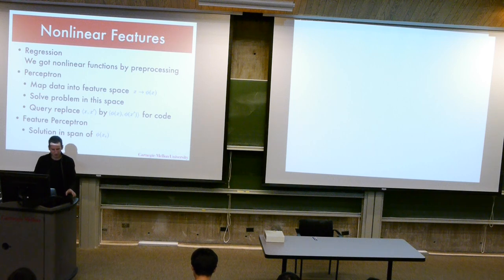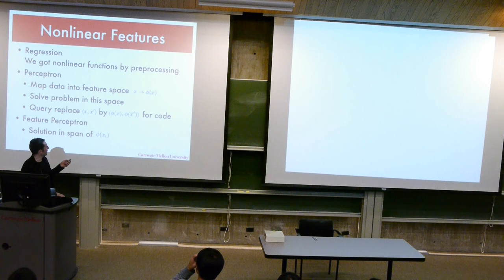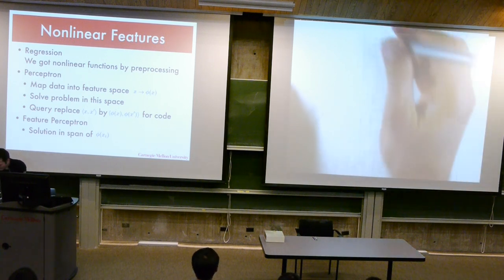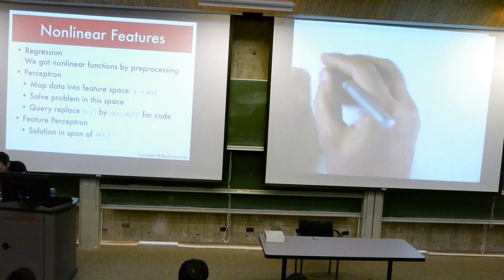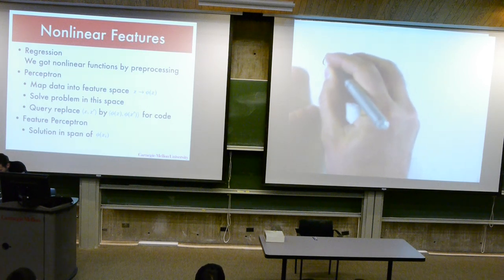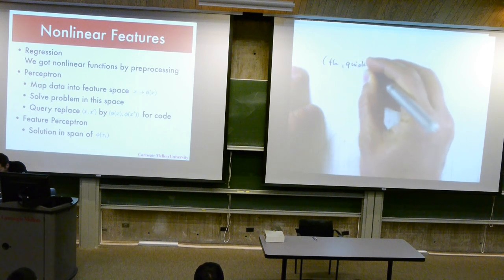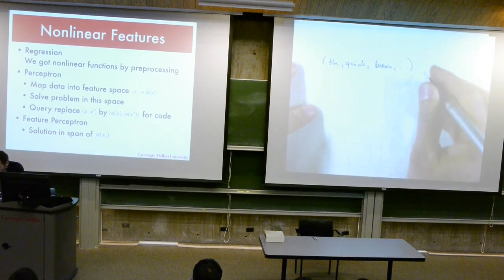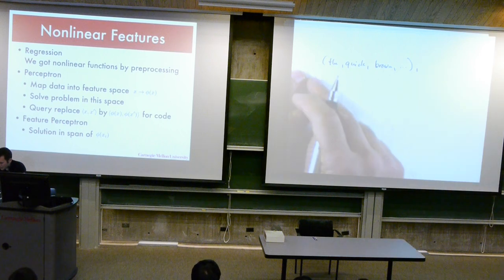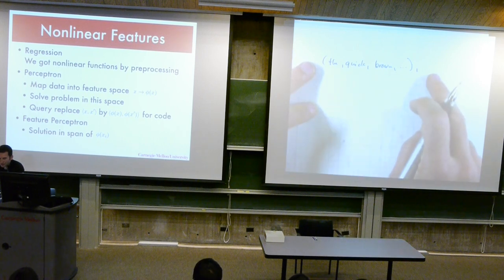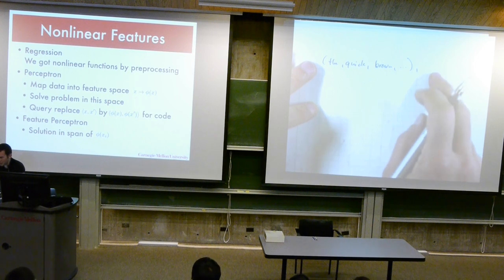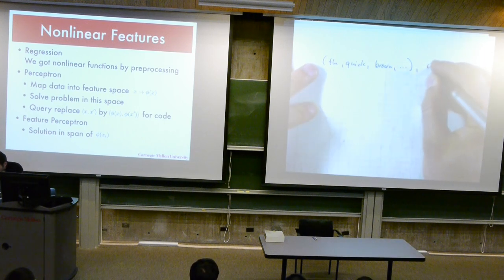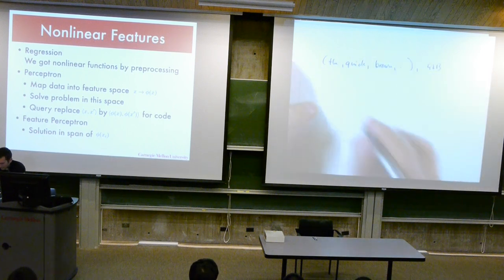What we could do with the perceptron is map the data into feature space — map x into φ(x). Let's go back to the example where we have mixed data: say I have an email like 'the quick brown fox jumped over the lazy dog.' I know maybe the most significant byte, the total length of the email — let's say it's 4 kilobytes because I have a lot of header information. I want to turn this into data that I can run my classifier on, so I map it into a vector.